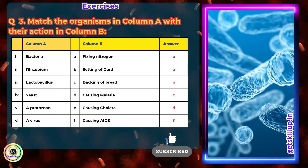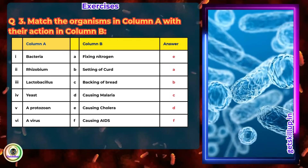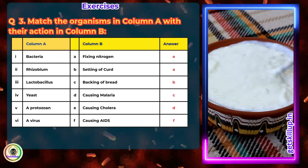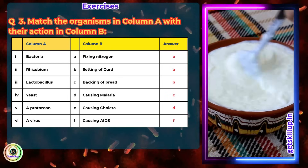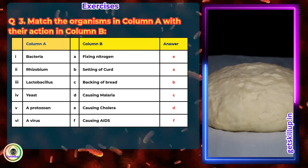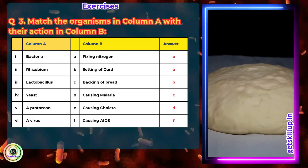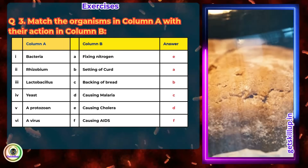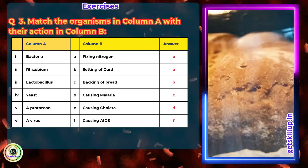Lactobacillus — correct match: setting of curd. Lactobacillus converts milk into curd by producing lactic acid. Yeast — correct match: baking of bread. Yeast ferments sugar and releases CO2, making the dough rise during bread making.